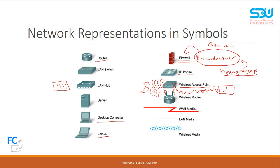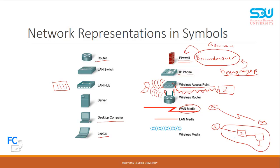The difference between a wireless access point and a wireless router is that the access point is connected to a switch — the switch sends electrical signals to the access point, which transforms them into wireless signals — while the wireless router works as a router but also has the ability to work as an access point. The Zorro-like symbol represents wide area media — wide connectivity between routers in different cities. The LAN cable symbol represents local connections from router to switch to computer. The wave symbols represent wireless media. Thank you for your attention — this is the end of lesson one.